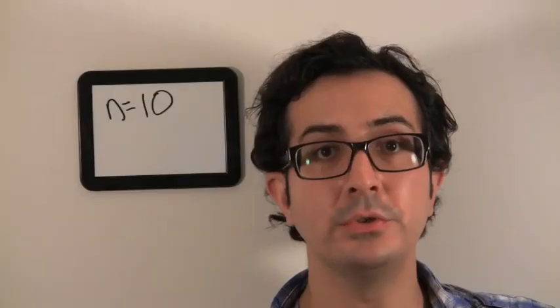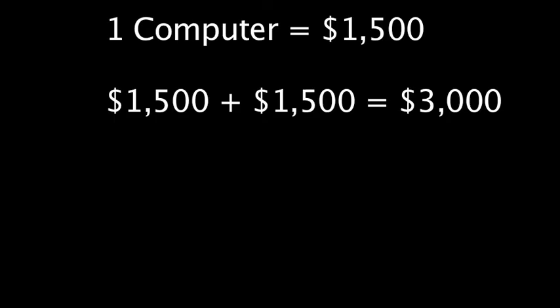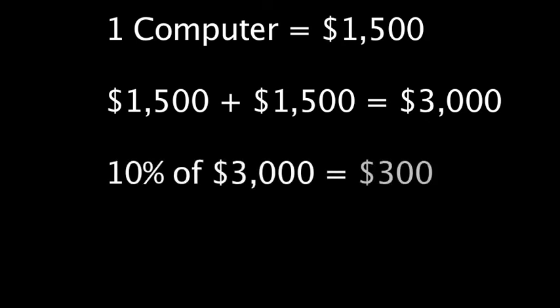So, he sold two computers for $1,500 each. That's a total of $3,000. He makes 10 percent of the sale. So his commission will be $300.